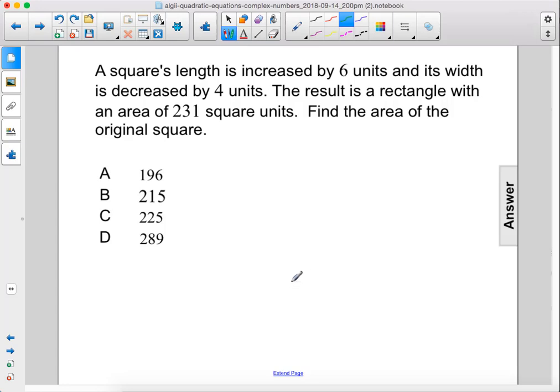A square's length is increased by 6 units and its width is decreased by 4 units. The result is a rectangle with an area of 231 square units. Find the area of the original square.